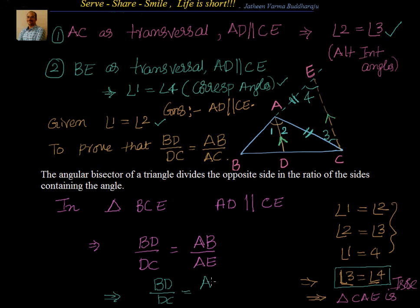This gives us that AC is equal to AE. Therefore I can write: BD by DC equals AB divided by AE, but since AE equals AC, we get BD by DC equals AB by AC. This is exactly what we needed to prove. So the angle bisector theorem is proved: the angle bisector AD divides the opposite side BC in the ratio AB to AC.